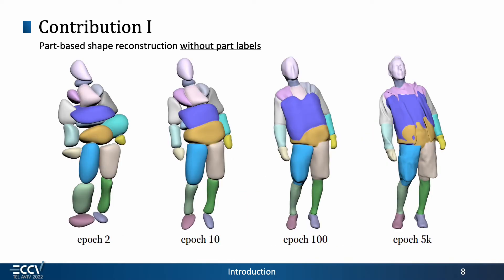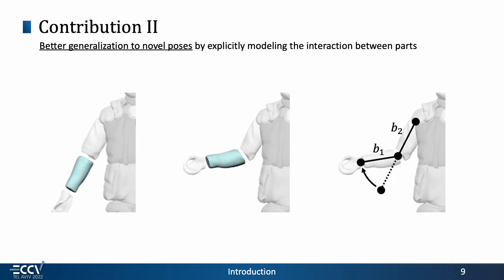A major advance of our method is that we can reconstruct a clothed human into parts with no need for part labels. As another major contribution, we obtain improved pose-generalization ability by explicitly modeling the interaction between parts.